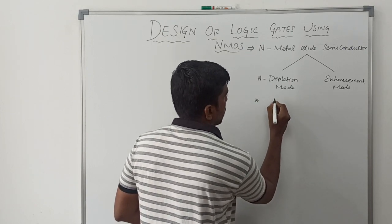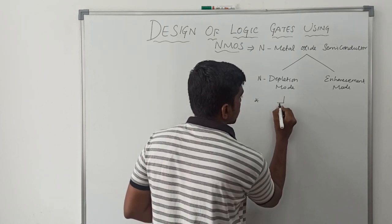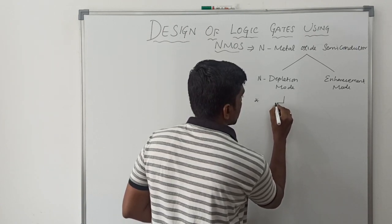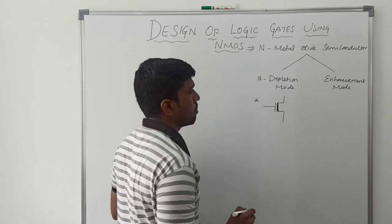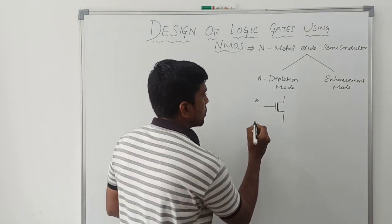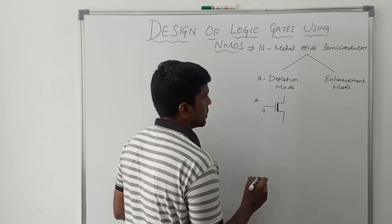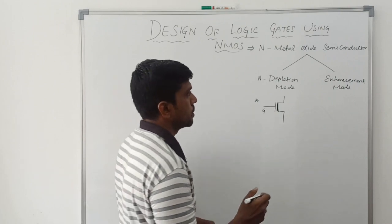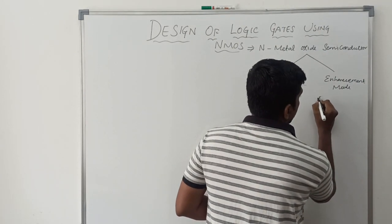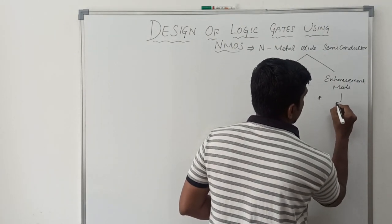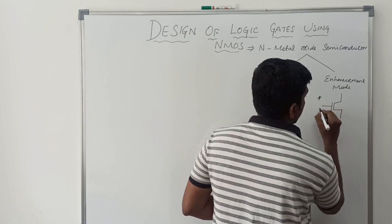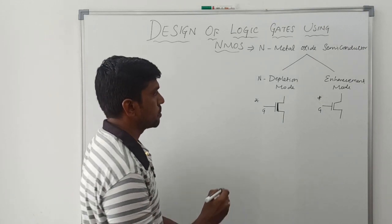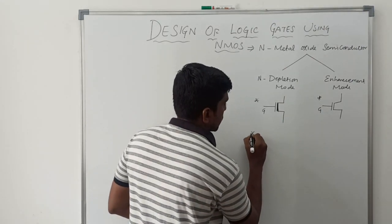Now I will draw the symbol of the depletion mode transistor. This terminal is called the gate — based on the gate voltage, the depletion mode transistor is turned on. Now I draw the symbol of the enhancement mode transistor. This is the symbol of the enhancement mode transistor.